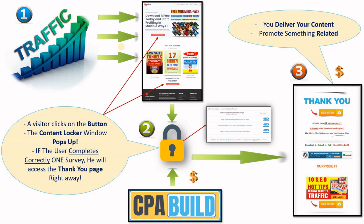When the content locker codes are added to the landing page, we can start sending traffic to it — and I am covering some traffic generation methods on this channel. How it works is that a visitor comes to your landing page, likes what he sees, and decides to click on one of the buttons. The content locker window will pop up and ask him to complete a survey in order to access the locked content. If the visitor completes the survey correctly, he will access the thank you page instantly and a small commission will be earned by you.